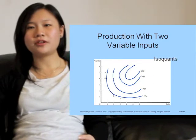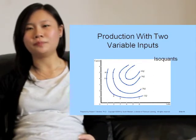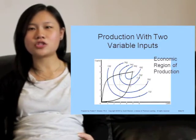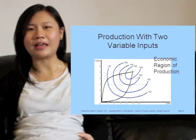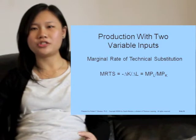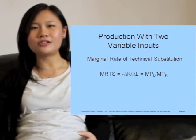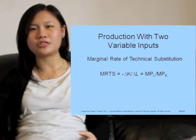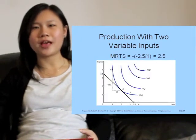Higher isoquants refer to higher levels of output. The economic region of production is given by the negatively sloped segments of isoquants between lines OVI and OCI. The marginal rate of technical substitution (MRTS) equals the marginal product of labor divided by the marginal product of capital, and equals the reduction in the amount of capital used divided by the increase in the quantity of labor used. MRTS is equal to the absolute value of the slope of the isoquant.